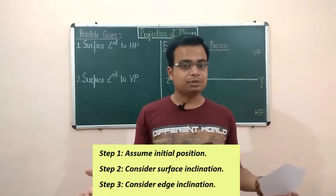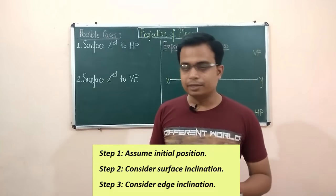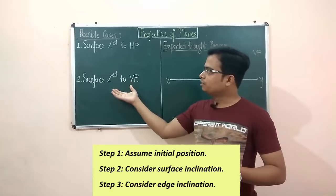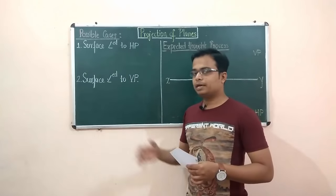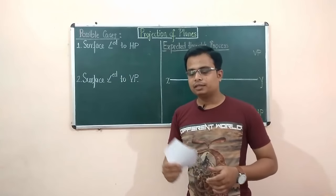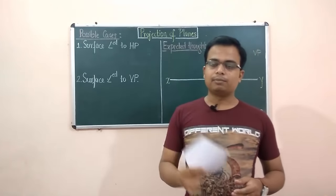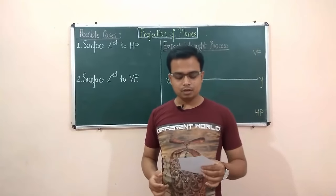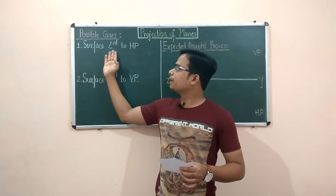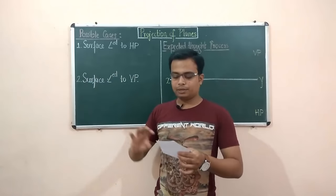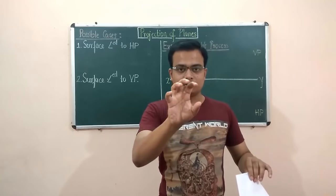We have divided this into two parts: surface inclined to HP and surface inclined to VP. The object I'm going to be considering is this pentagonal plane. So the first case is surface inclined to HP.